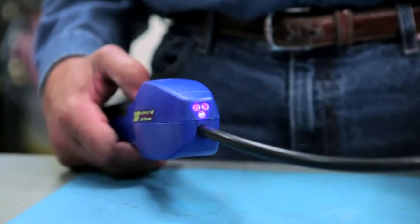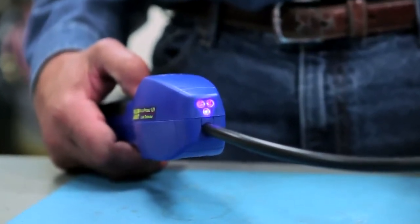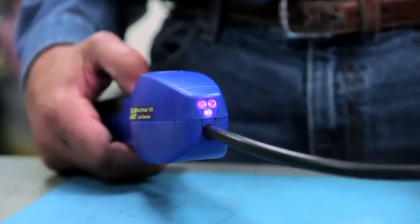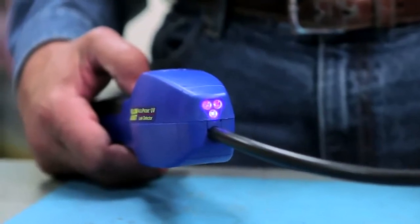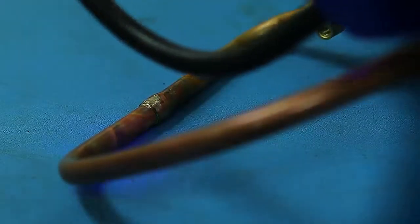The Acuprobe UV also features a three LED UV light system, which works with 395 to 415 nanometer wavelength leak tracing dyes for use on systems that were either installed with or have had dye injected in past service calls.